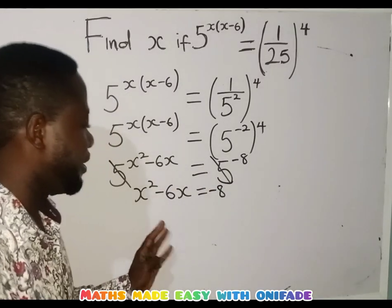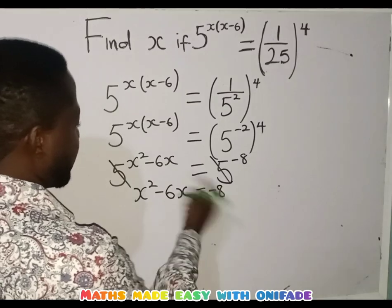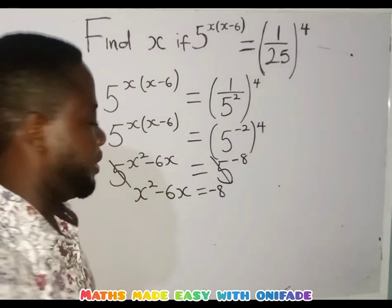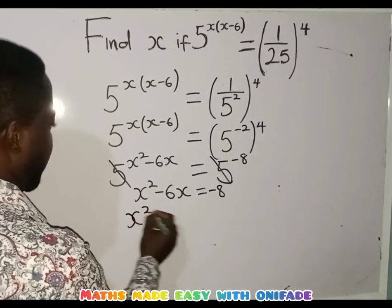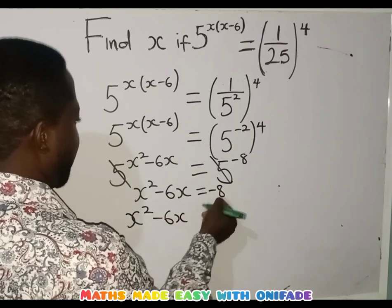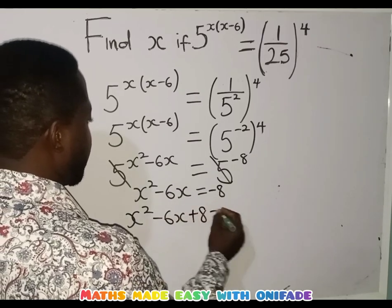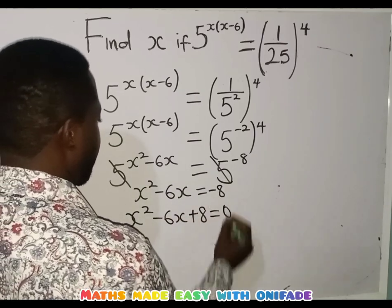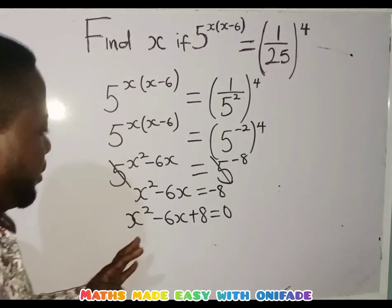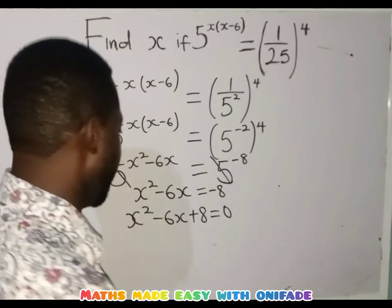Alright, the next thing to do is to bring this minus 8 across so that we can have a quadratic equation. So I am going to have x squared minus 6x, then minus 8 moves here and becomes plus 8, equals to 0. So we are going to solve this using the factorization method.